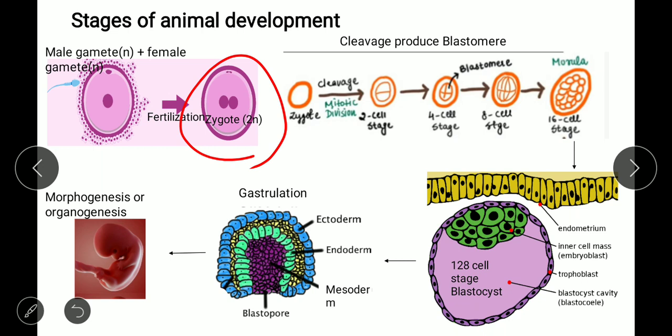The third stage is cleavage — multiple rounds of mitotic cell division. The zygote divides from one cell to two cells, four cells, eight cells, and so on. Cleavage results in the production of blastomeres — cells formed by cleavage of the fertilized ovum.